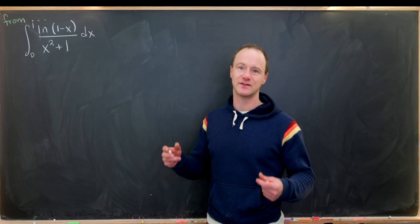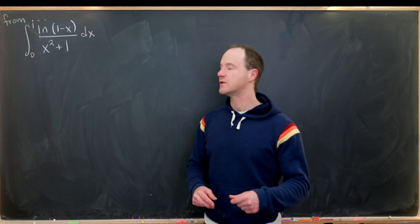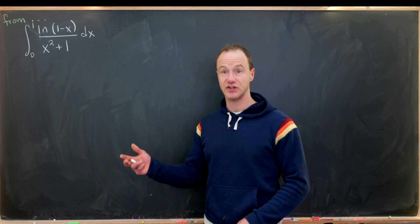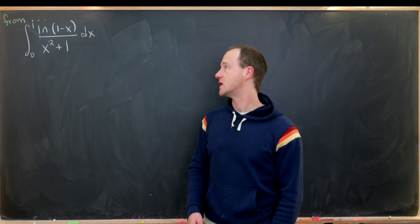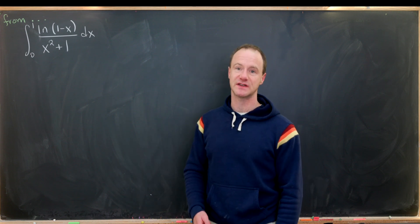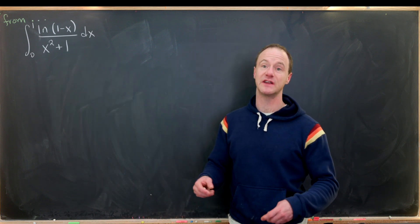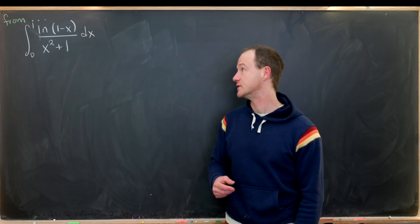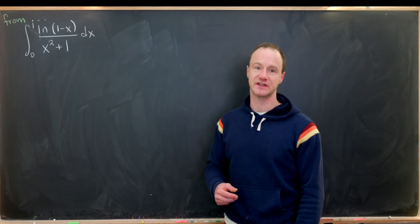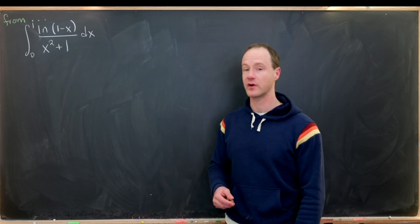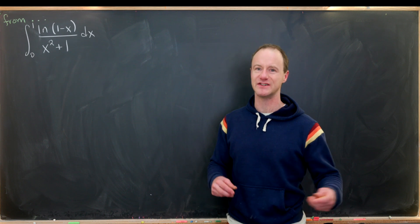A bunch of stuff cancelled and I was just back at the original integral. The other way to do it, which was the suggestion of the integral suggester, is to use a trigonometric substitution. This x squared plus 1 in the denominator gives you a hint at a trig substitution, but I thought I could get away without using it with my double integral trick. Maybe that is still possible — I just couldn't crack it.